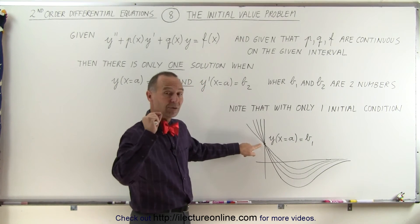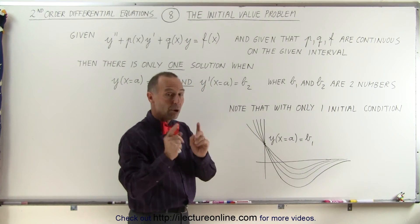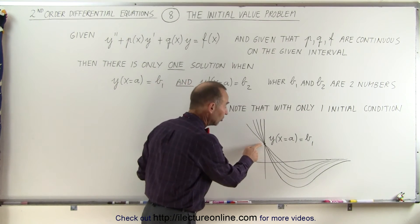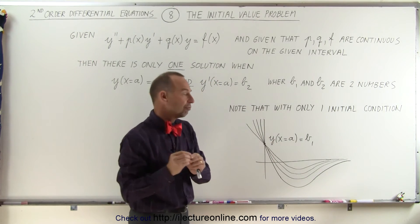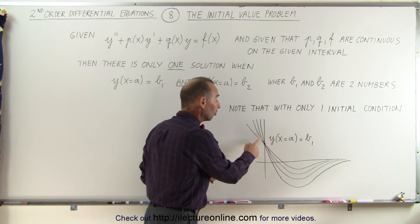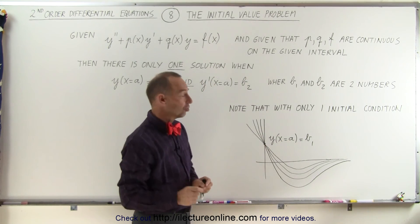So, if we only pick a specific slope, only one of those lines will actually both have that initial condition for the function at x equals a and have the initial condition for the derivative function, the slope of that function at x equals a. And then in that case, there's only one solution.